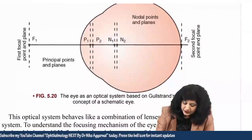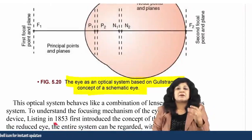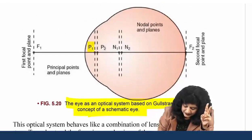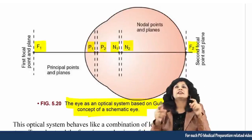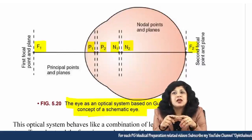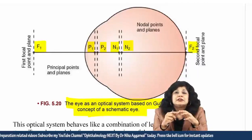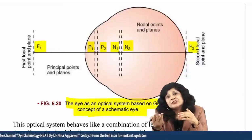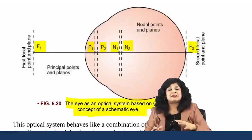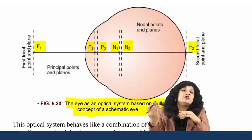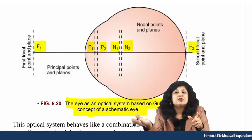This is based on Gullstrand's concept of the schematic eye. Here you have two principal points, two nodal points, and two focal points — a first and a second. Since the cornea, lens, and eye do not have negligible thickness, we have two principal foci, two nodal points, and two focal points. The basic difference is between the schematic eye given by Gullstrand and the reduced eye given by Listing.